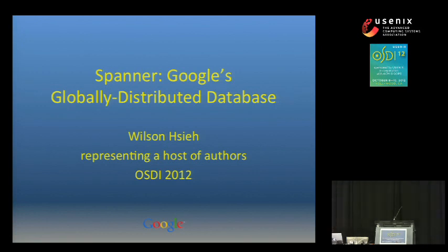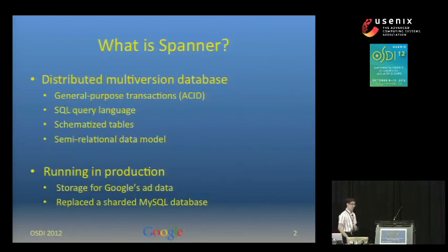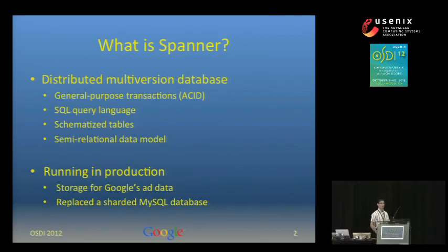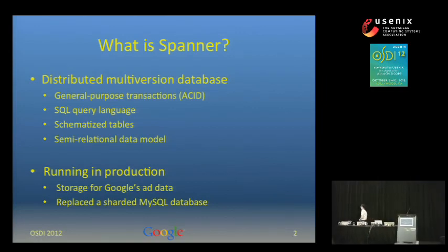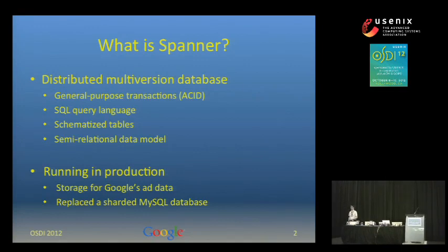Good afternoon. It gives me great pleasure today to be able to talk to you about work we've been doing over the last four and a half years or so at Google. That work involves building a distributed database called Spanner. Spanner currently provides most of the critical features you'd expect from a database: schematized tables, a semi-relational data model, general purpose transactions, and an SQL-based query language.